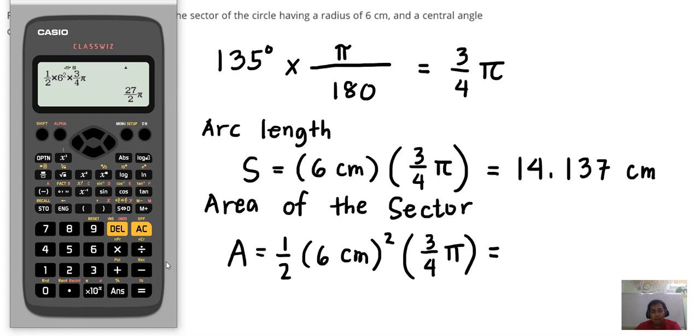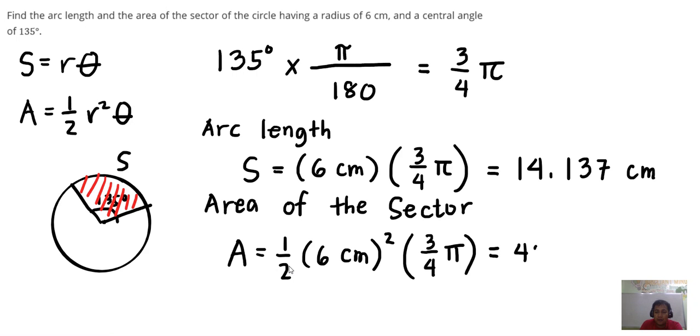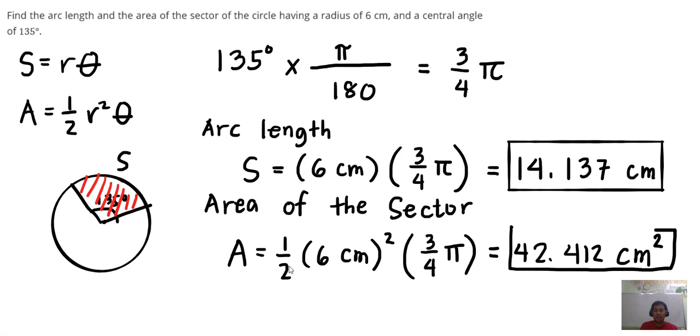This equals 27 over 2 pi, or 42.412. Since this is area, the unit is cm squared. So these are our answers for the arc length and the area of the sector for the given problem.